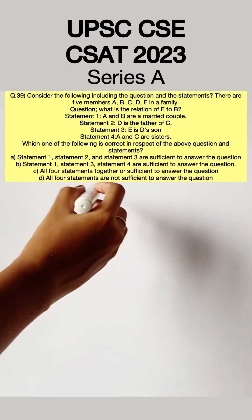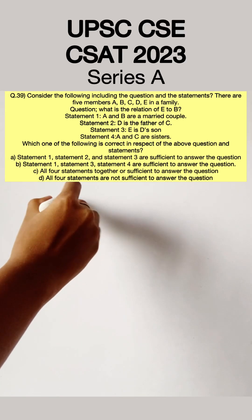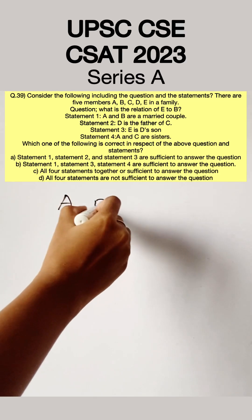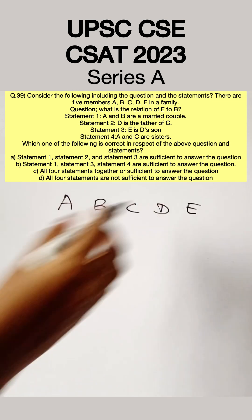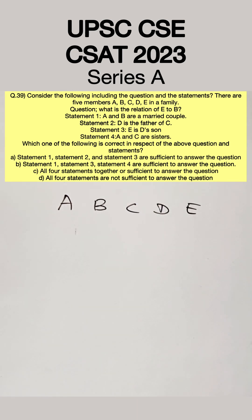There are 5 members in a family: A, B, C, D, and E. There are 4 statements given. We are supposed to find the relation between E and B. This is a data sufficiency question.